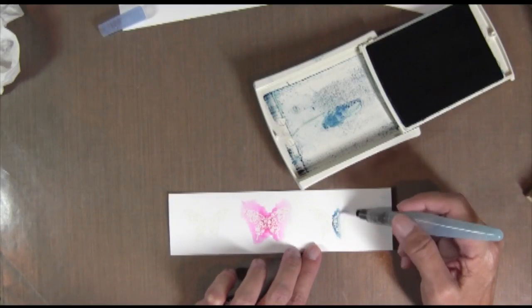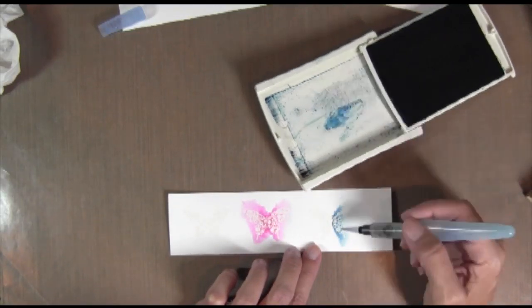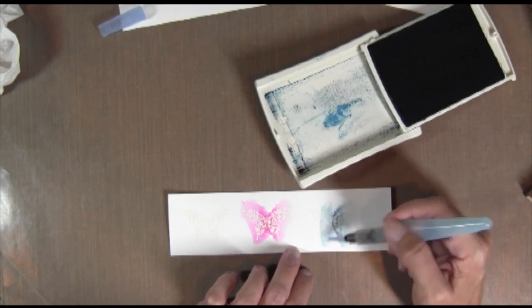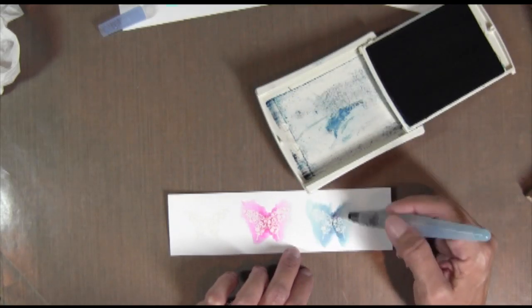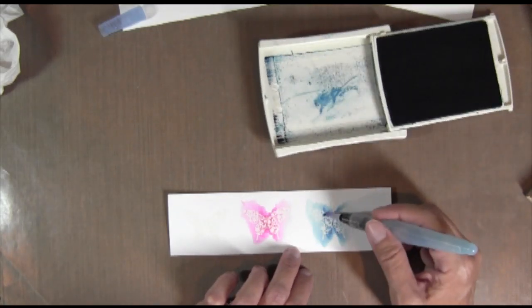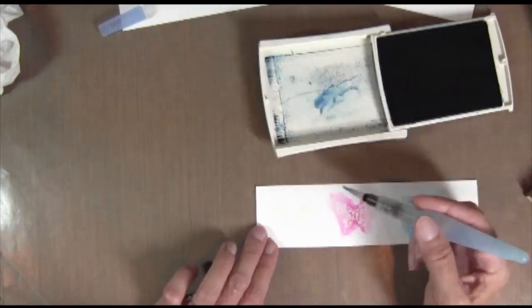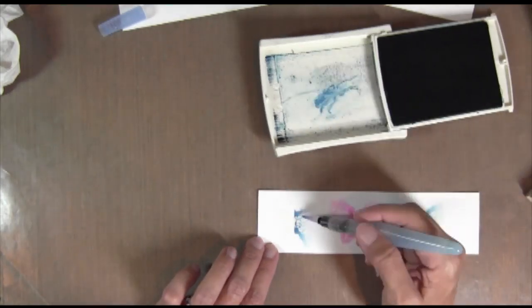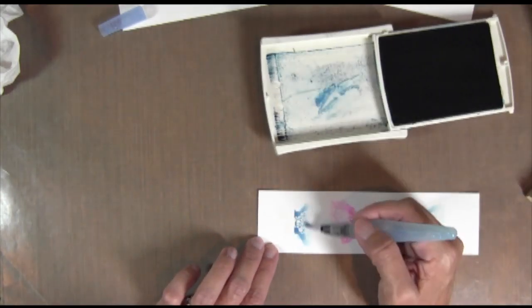So I'm going to do the same thing with the other color. Notice I try to make it lighter as I get toward the outer wing of the butterfly. These colors are Melon Mambo and Not Quite Navy which is my favorite blue.